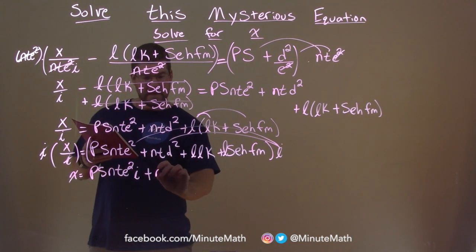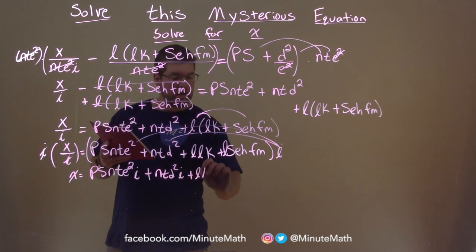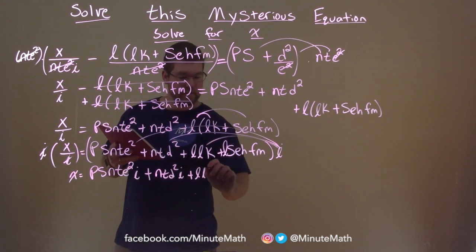i times n, t, d squared, i plus l, l, distribute the i again, ki. That's an l.